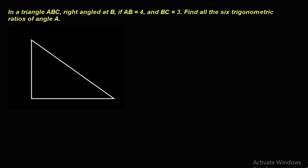Hi everybody, welcome to Aga Math. This is Rakesh. Next question: in a triangle ABC, right angle at B, if AB equals 4 units and BC equals 3 units, find all six trigonometric ratios of angle A.